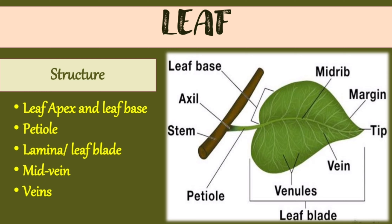The broad expanded part of the leaf is called the lamina or leaf blade. The central vein running from the middle is called the midrib — you can see it clearly in the picture. Veins are the network of branches arising from the midrib, and you can see many veins in the leaf.